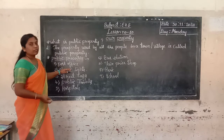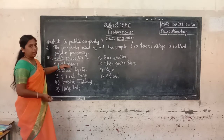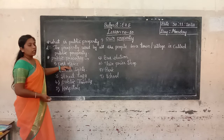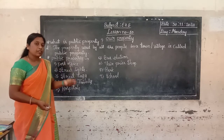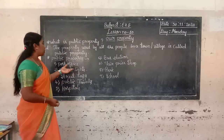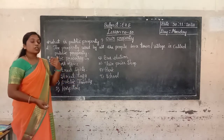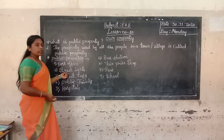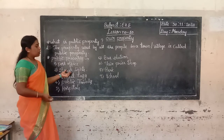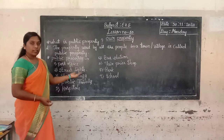Post office is one of the useful public properties. We give messages to our relatives or friends through post letters using the post office. Second — street lights. Street lights help people to walk during night.